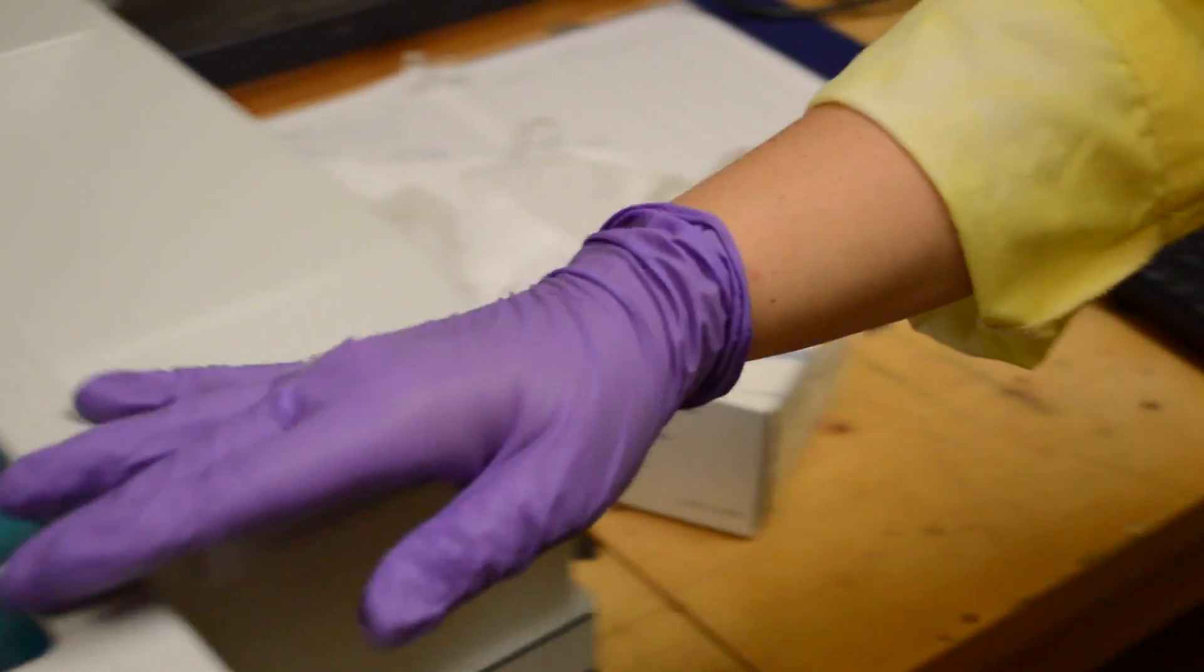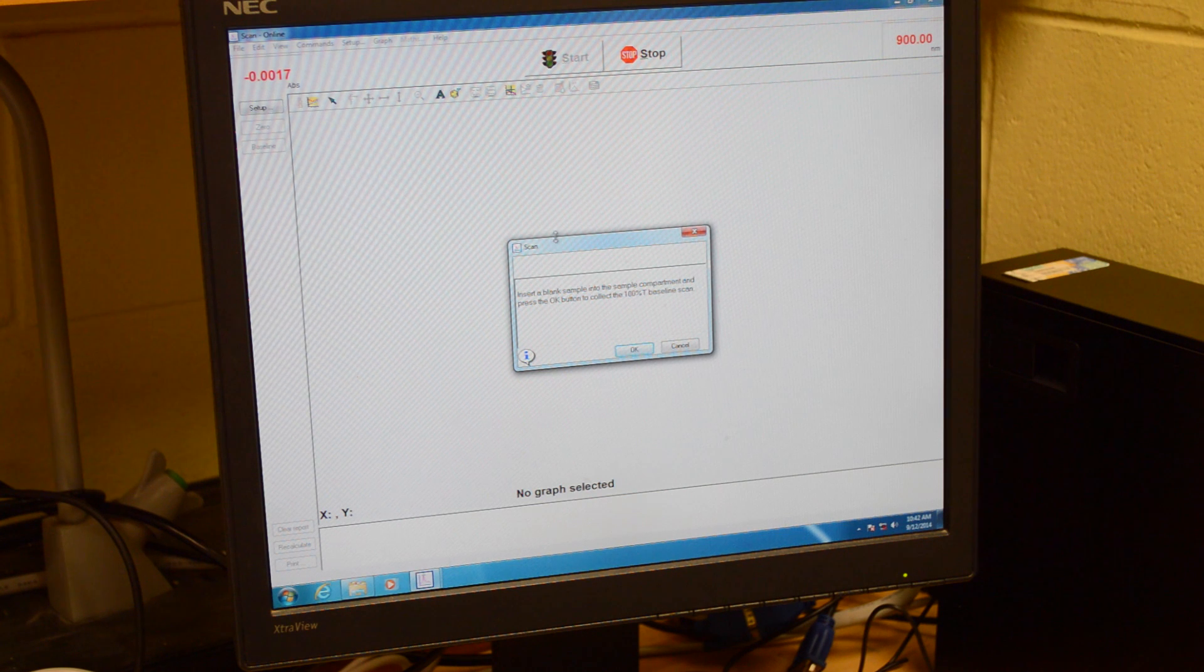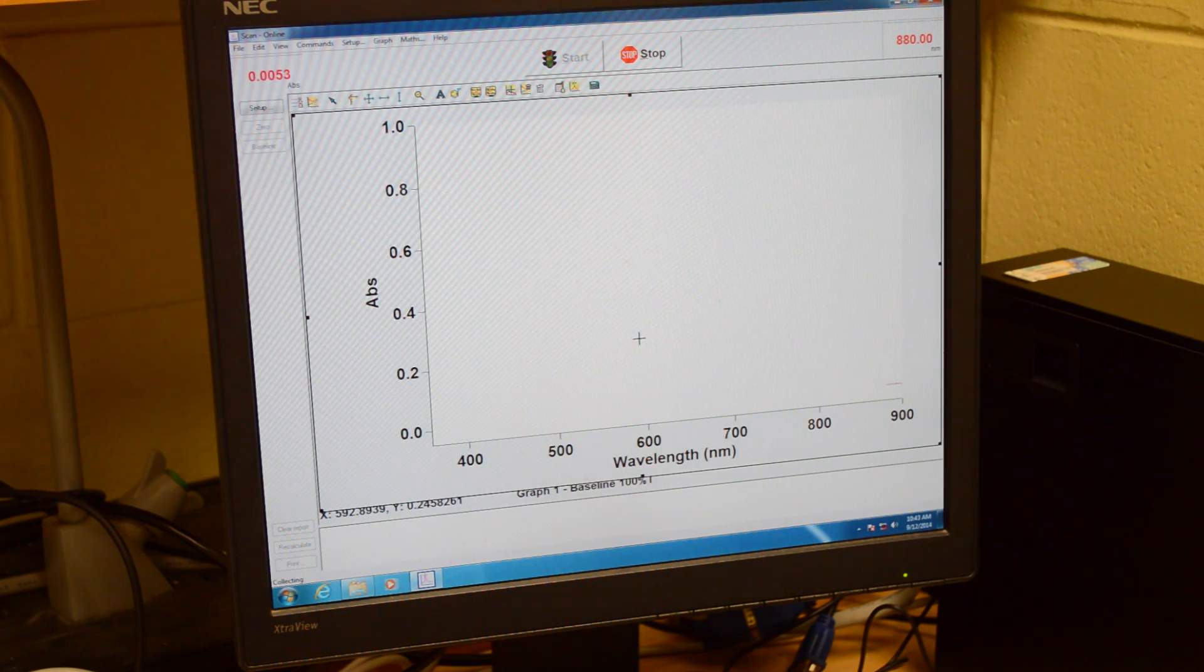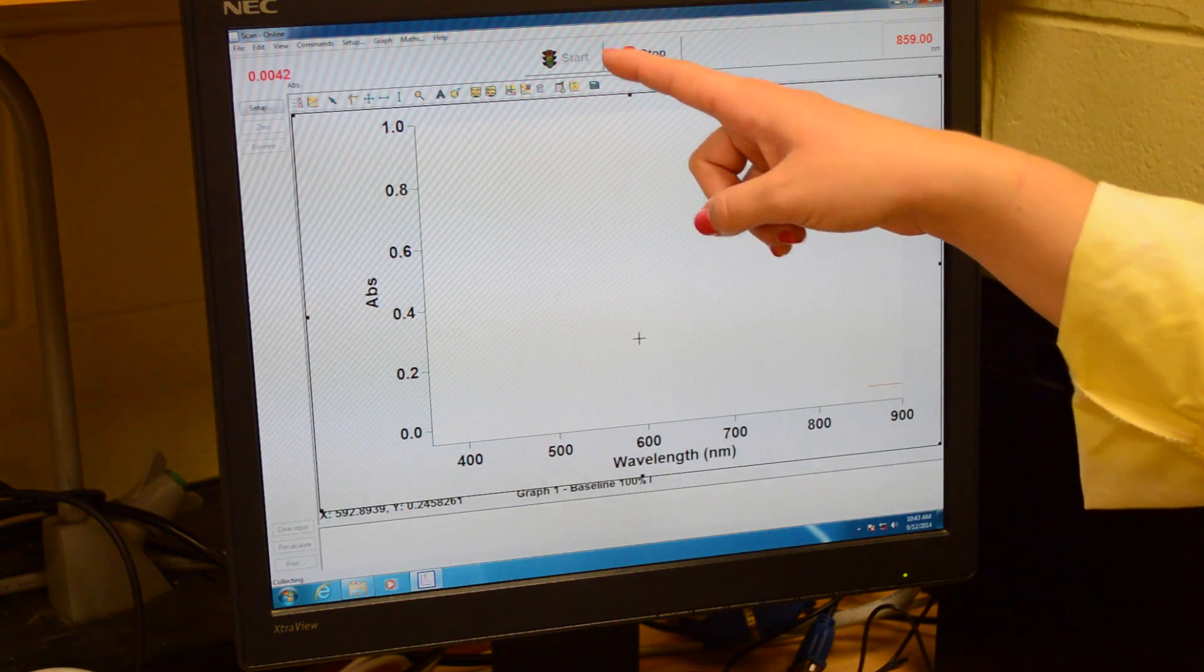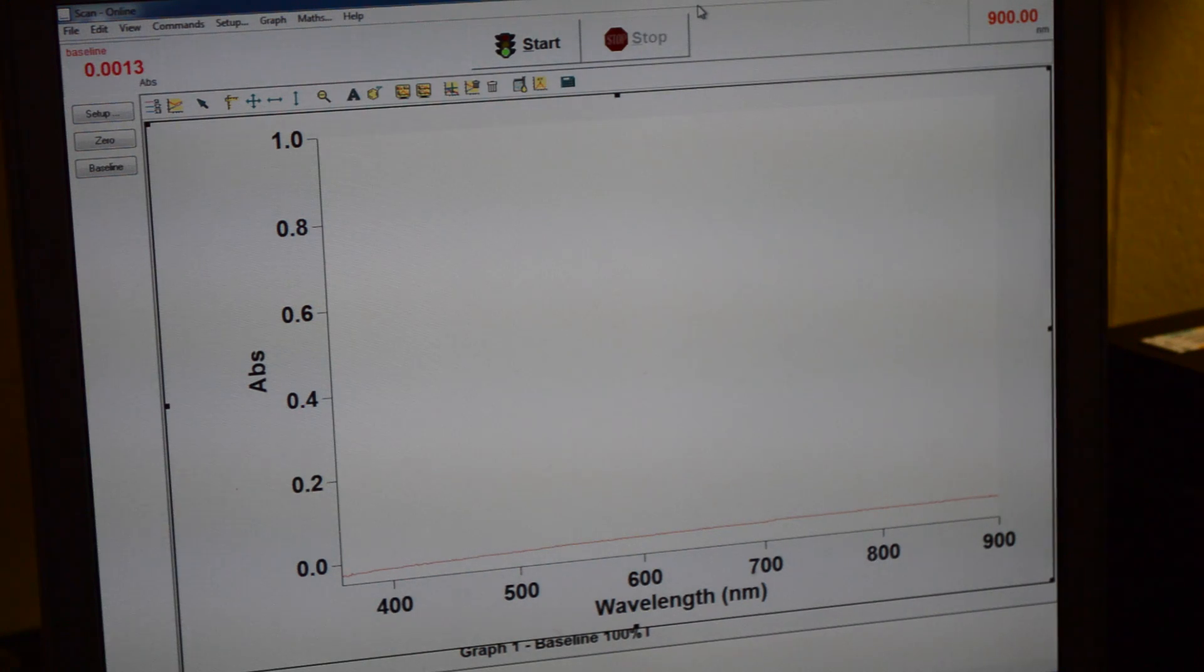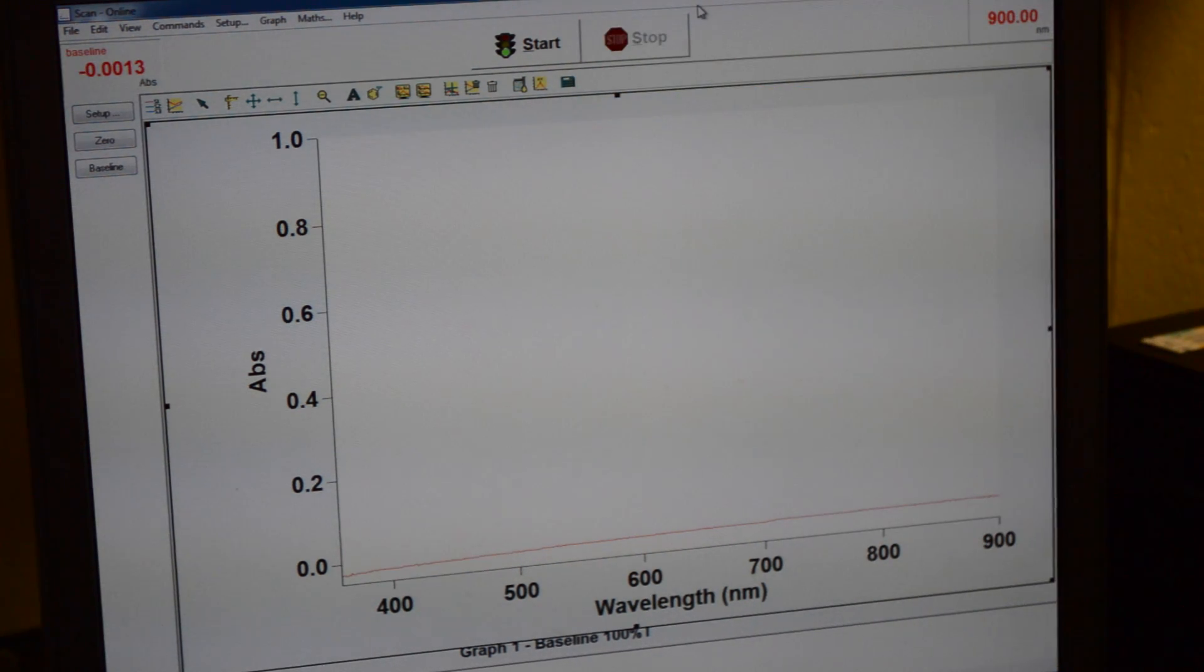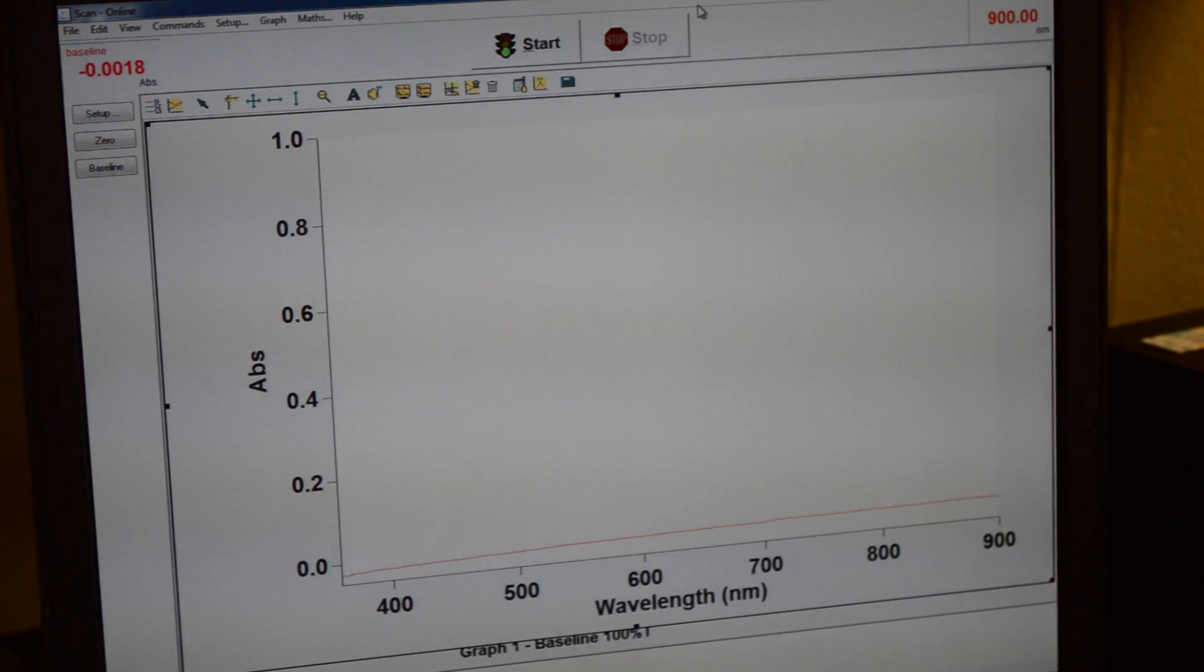Then we go back to the computer. Here there is a screen that will say insert a blank sample into the sample compartment and click OK to collect the 100% baseline scan. So here we just wait until the start button turns green again. As you can see, the green start button has lit up again. To ensure that the system is zeroed, we are going to run a sample on the blanks. To do this, you just press start.